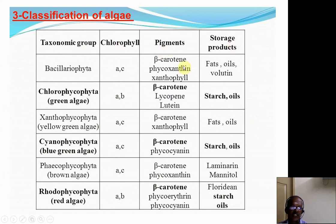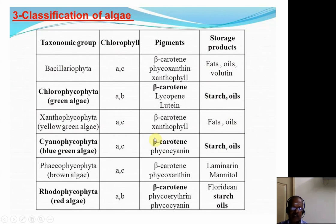Regarding storage products: in Bacillariophyta, the storage products are fat, oil, and volutin; in Chlorophyta, starch and oil; in Xanthophyta (yellow-green algae), fat and oil; in Euglenophyta, starch and oil; in Phaeophyta (brown algae), laminarin and mannitol; and in Rhodophyta, floridean starch and oil.